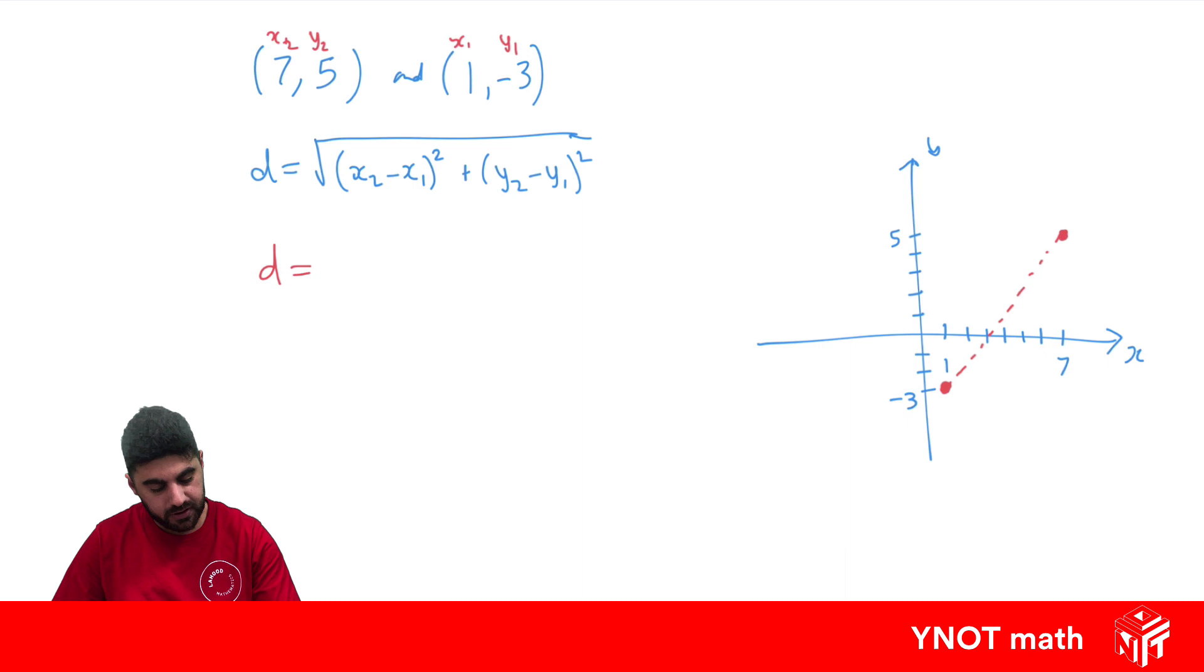Let's plug all those in. So d is going to be the square root of x2, which is 7, minus x1, which is 1, all squared, plus y2, which is 5, minus y1, which is -3. You've got to be really careful when one of the values is negative, because the negative belongs in the formula and this negative belongs with y1.